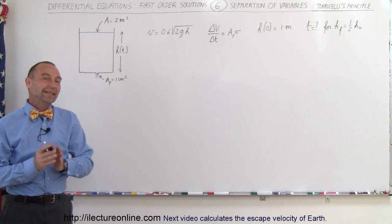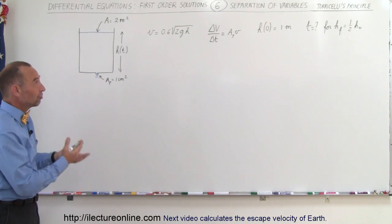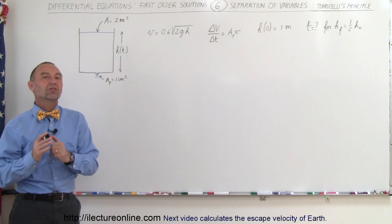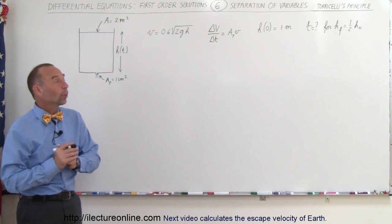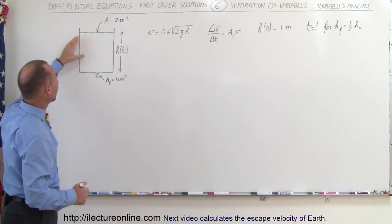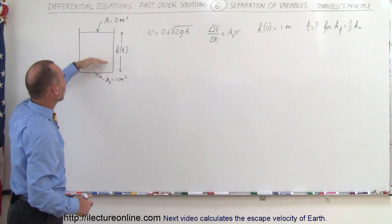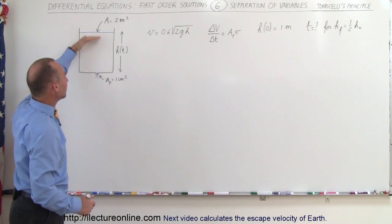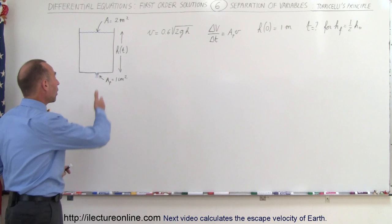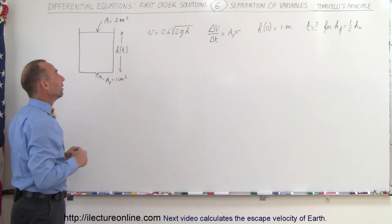Welcome to ElectronLine. In this example, we're going to solve a differential equation involving Torricelli's principle. What that means is we have a big barrel right here. It's full with water, filled to a height h. And there's a small opening at the very bottom, so water rushes through the small opening right there.